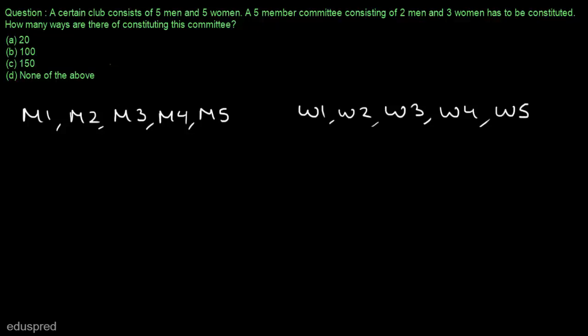These are 5 women and we have to form a 5 member committee consisting of 2 men and 3 women. So that means out of 5 men, we have to select 2 men and out of 5 women, we have to select 3 women.